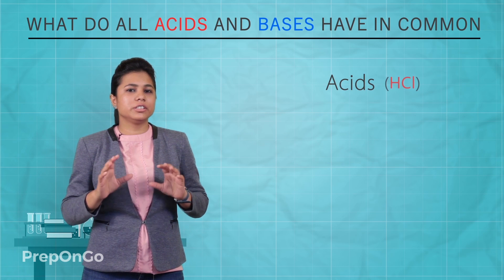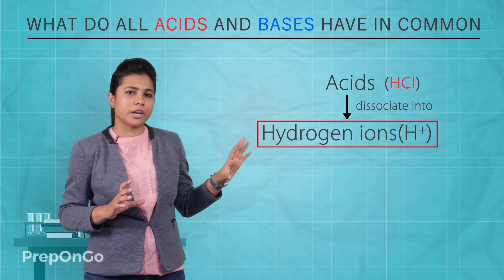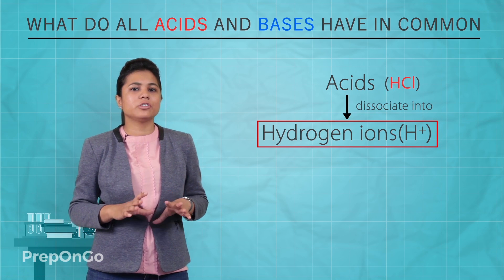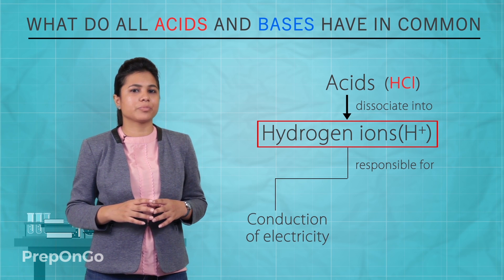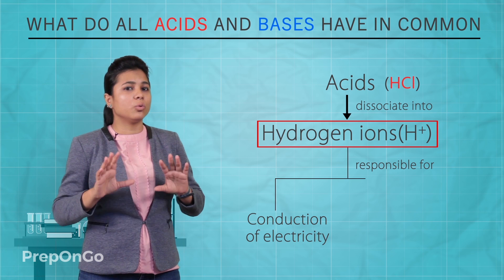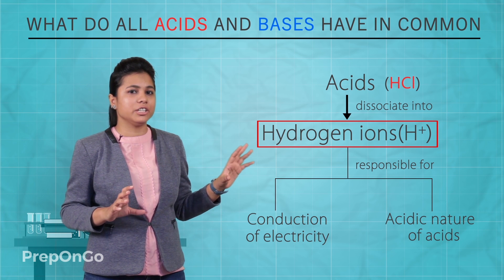The acid dissociates into cations which are hydrogen ions (H+). These hydrogen ions are responsible for the electric current and are responsible for the acidic nature of acids.